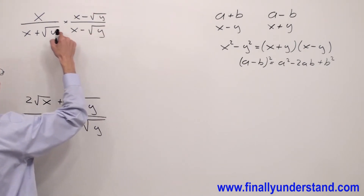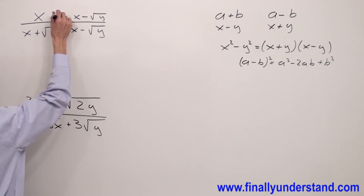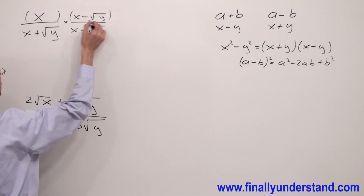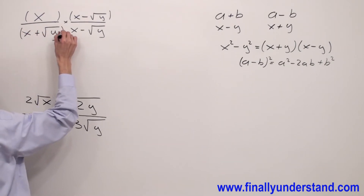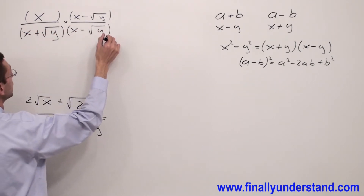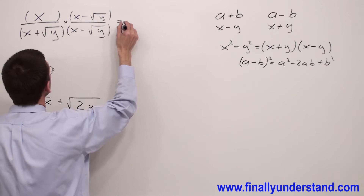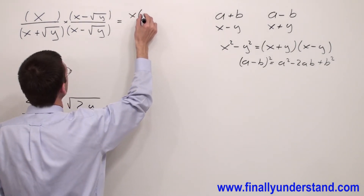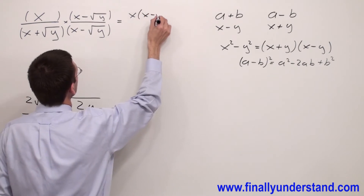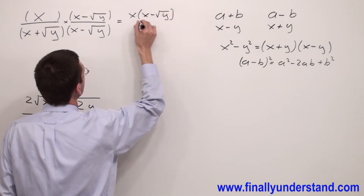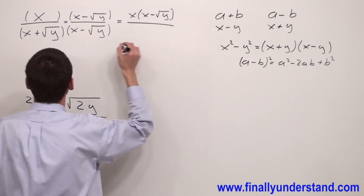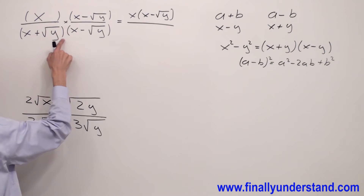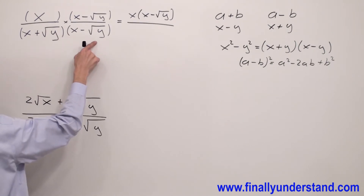Now we have to perform the multiplication. Anytime you multiply fractions, you have to multiply numerator by the numerator and denominator by the denominator. That's why we are going to have x times (x minus square root of y) over (x plus square root of y) times (x minus square root of y).